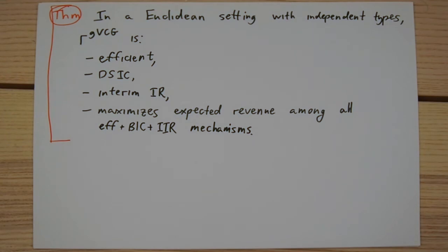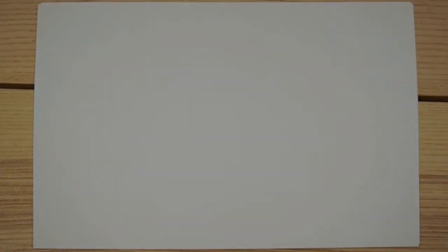Let us now prove this bold statement. The revenue equivalence theorem for Bayesian incentive-compatible mechanisms gives us the envelope representation of expected payoffs, meaning that in any Bayesian incentive-compatible mechanism, for any player i and any pair of types of this player, the following holds.